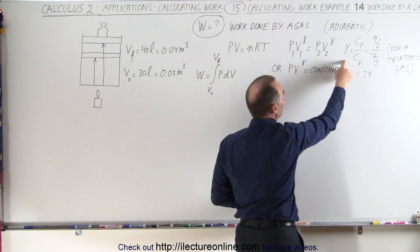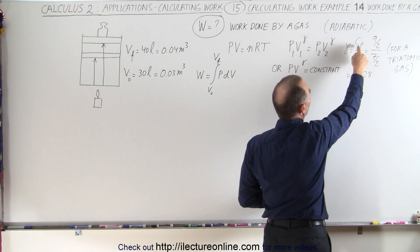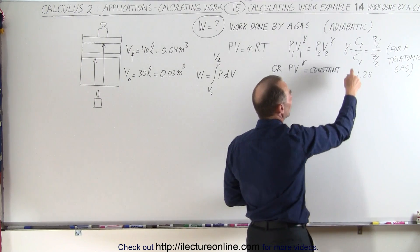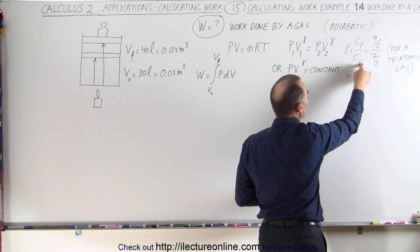This gamma is actually the ratio of the specific heat sub p, when the pressure remains constant of the gas, and the specific heat of the gas when the volume remains constant.